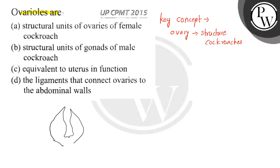There are two ovaries, and in these there are tubules which are eight in number, which produce eggs. They are called ovarioles. So ovarioles are structural units of the ovaries of female cockroach - option A is correct.